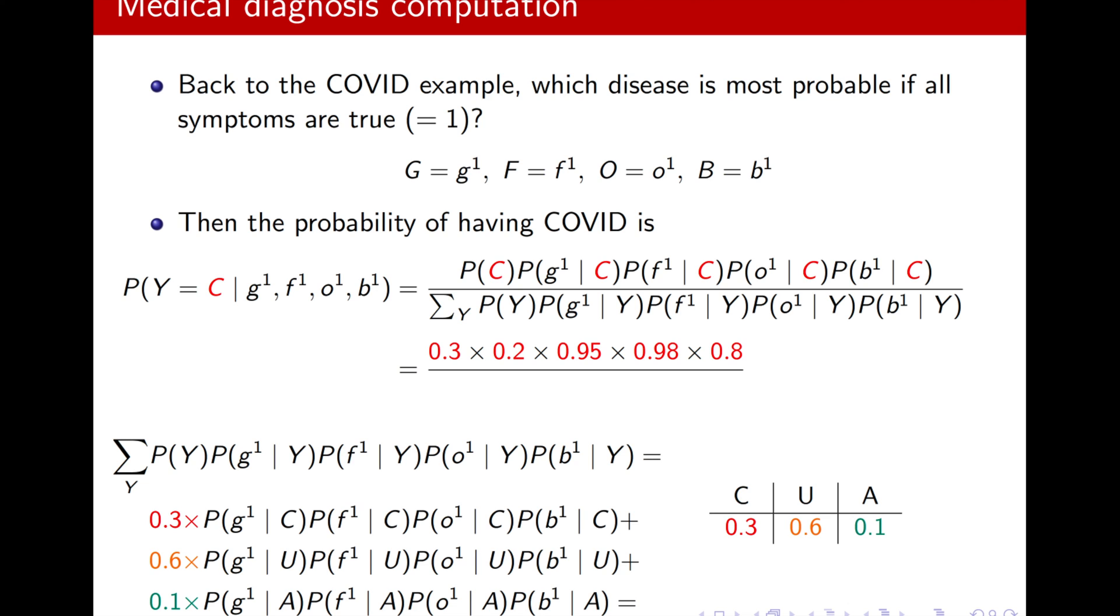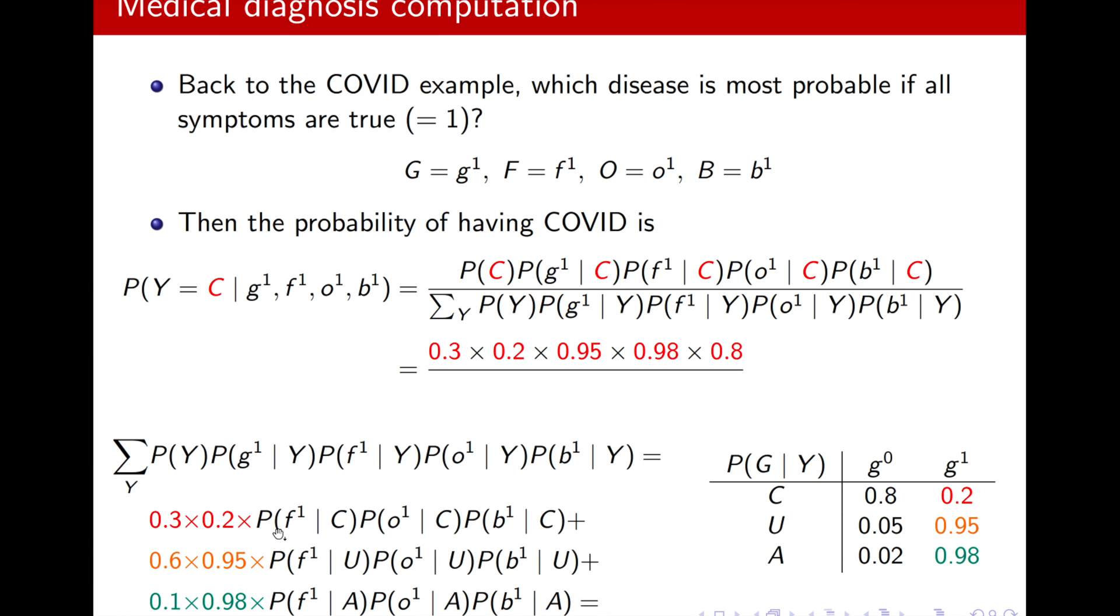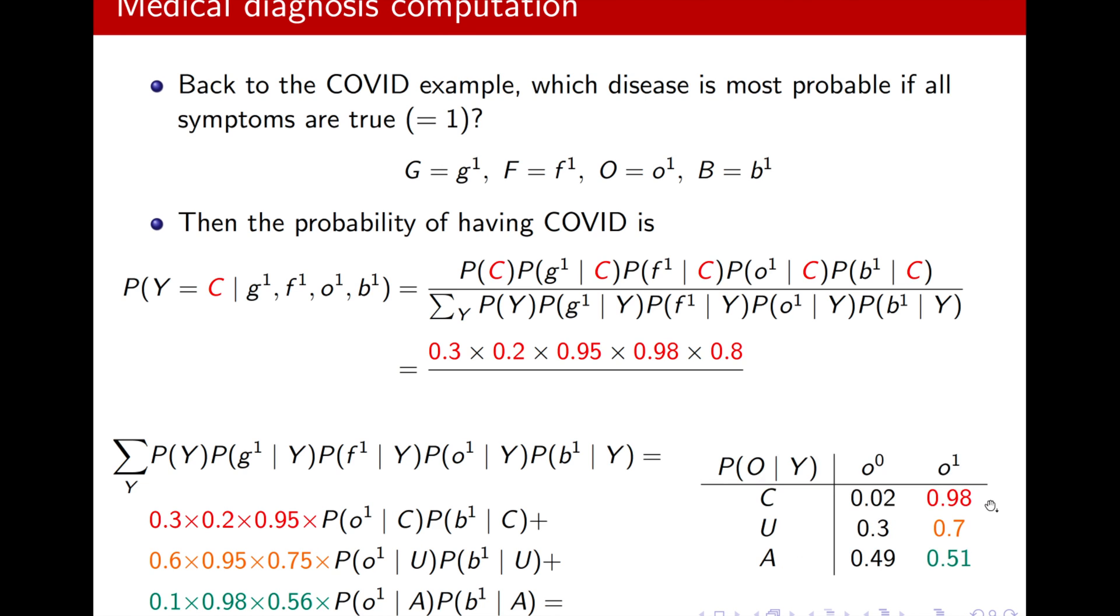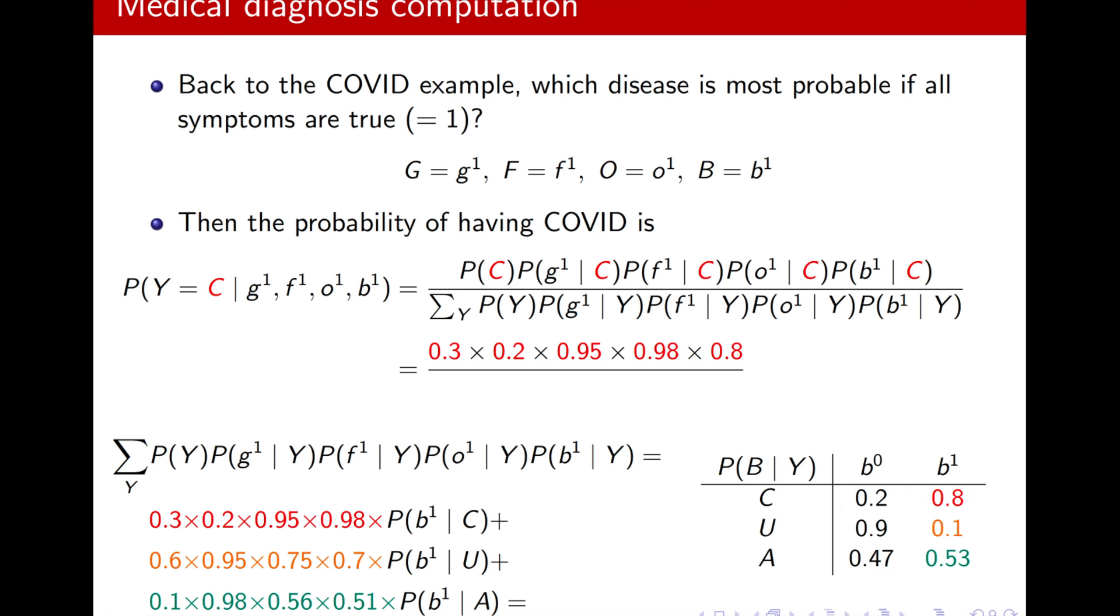What about the other one for G? Well, I just can copy and paste this column here, right? Because that's exactly what I need. What about the next one? If you have F1 given Y. So, F1 given C, U, A, they're all here. And so on. I can just replace those columns with the corresponding CPDs.